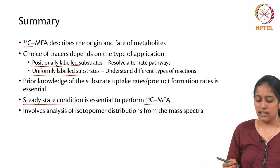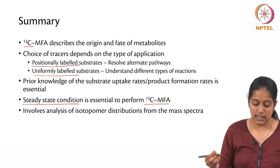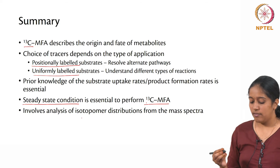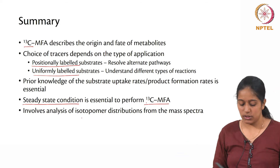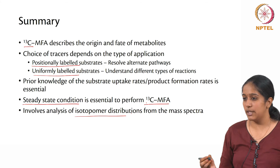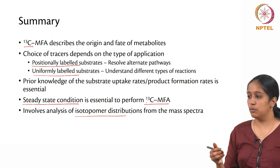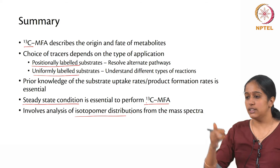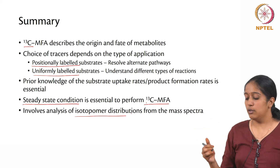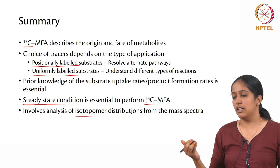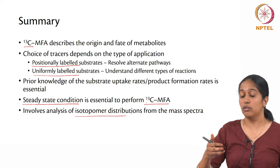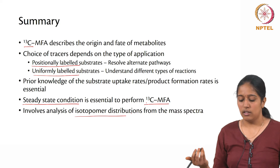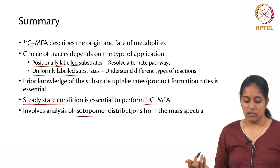To carry out 13C MFA, you identify different isotopomer distributions from mass spectra, back-trace them to different flux ratios, and generate a flux map. Using this flux map, you can then decide whether to overexpress a particular metabolite, down-regulate a particular gene, and so on.